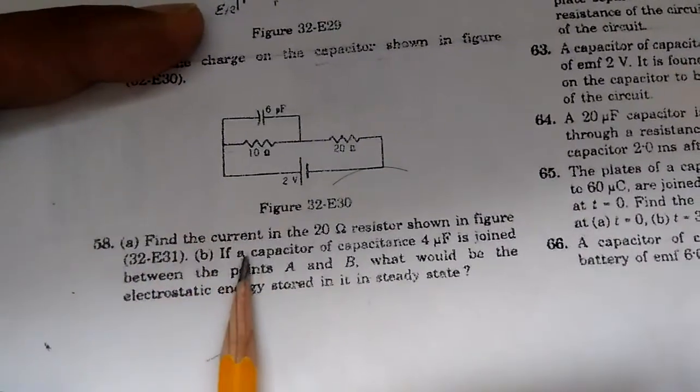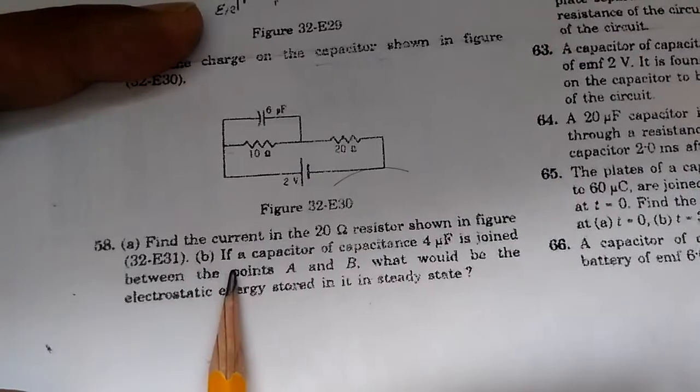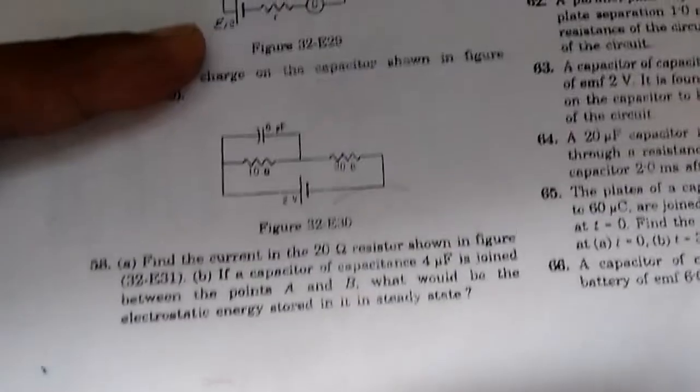Number 58. We need to find the current in the 20 ohm resistor shown in the figure. Part B we'll discuss later.